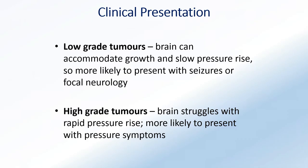In terms of the clinical presentation of brain tumors, you have two categories. Low-grade tumors begin as benign tumors that slowly grow, the brain can accommodate this growth, you tend to get slow pressure rises, and they are most likely associated with some seizures or focal neurology. In contrast, the high-grade malignant tumors, because of the rapid growth, the brain tends to struggle, and you are more likely to present with symptoms of pressure.